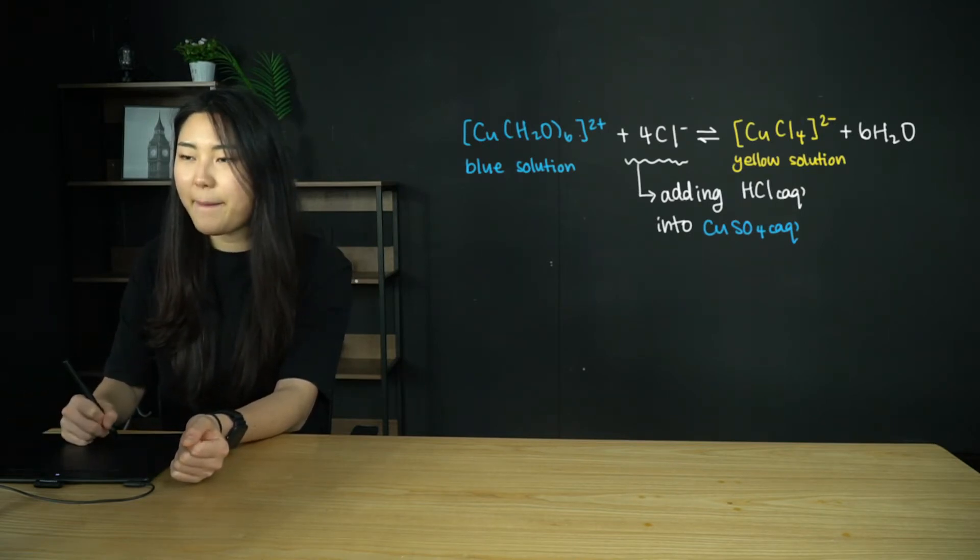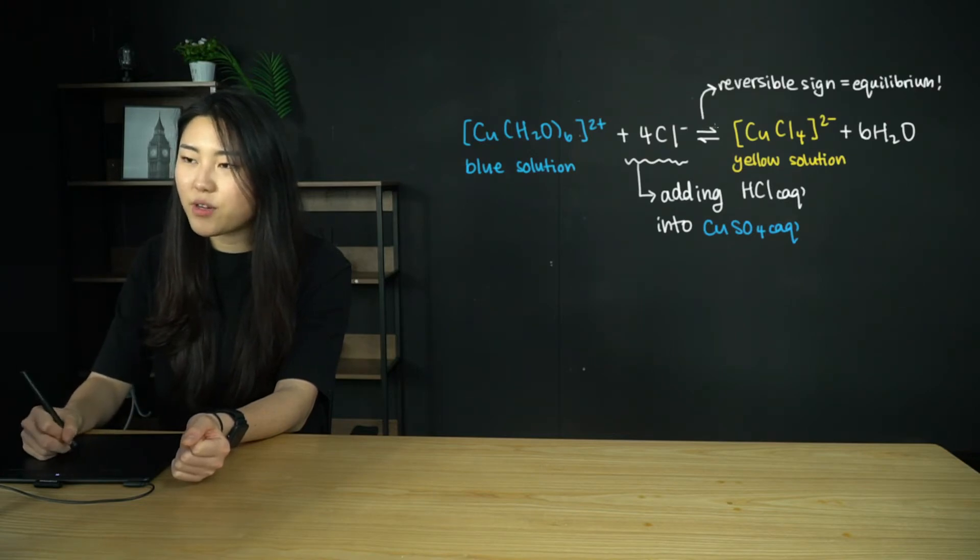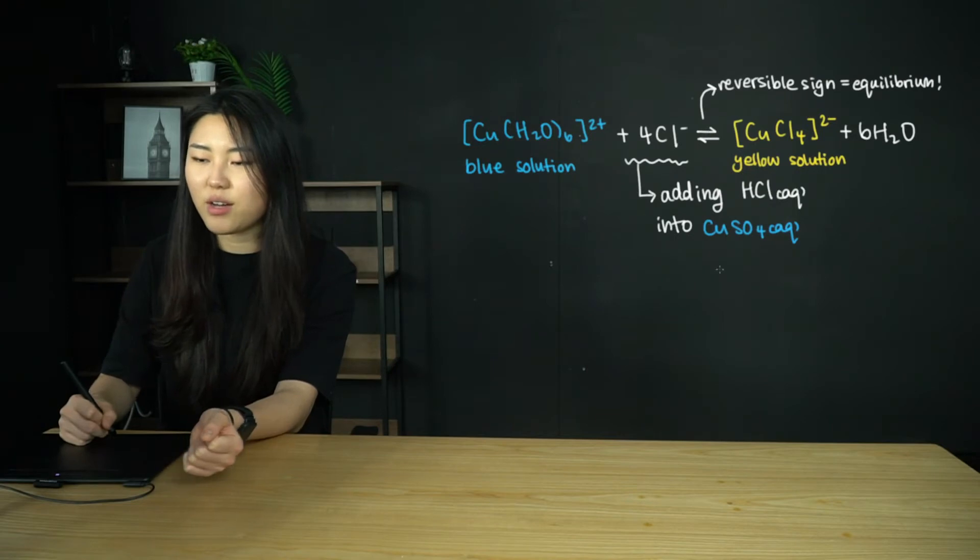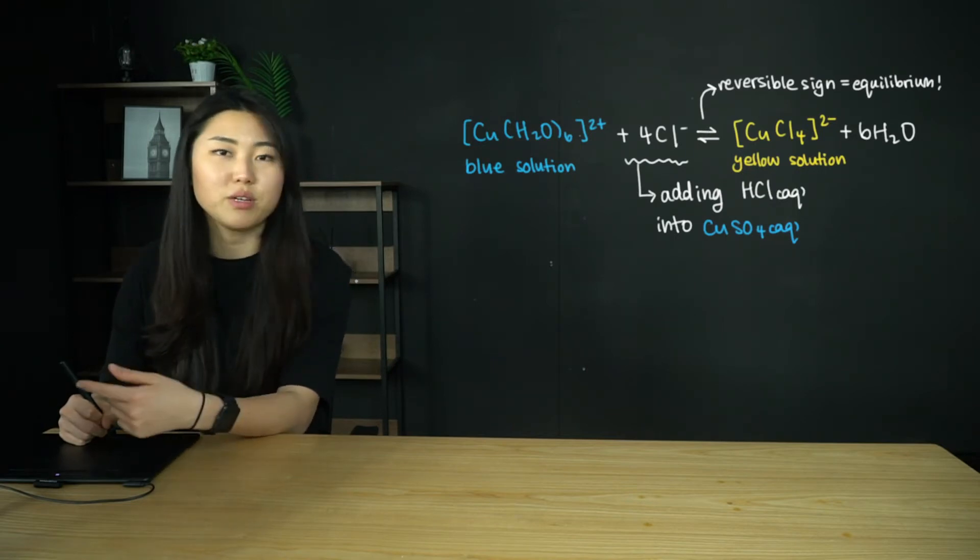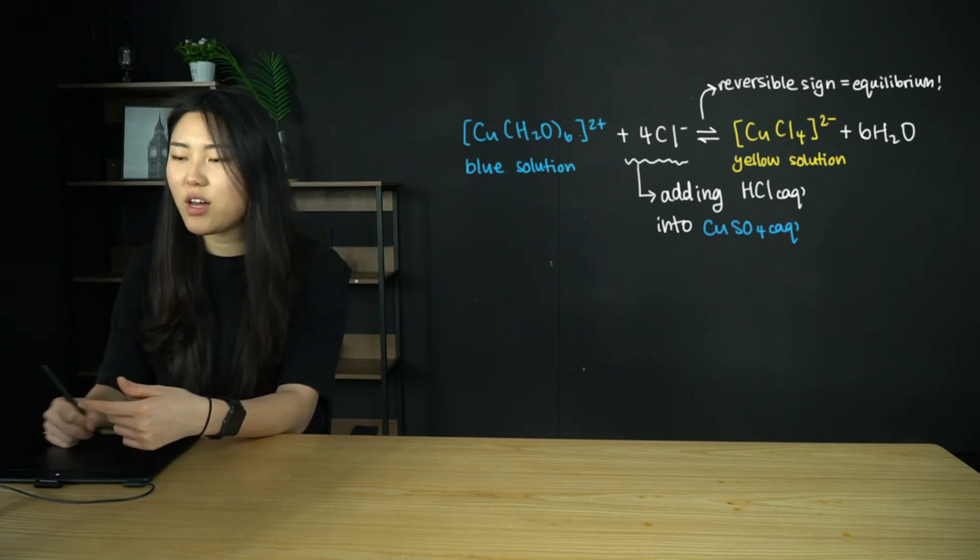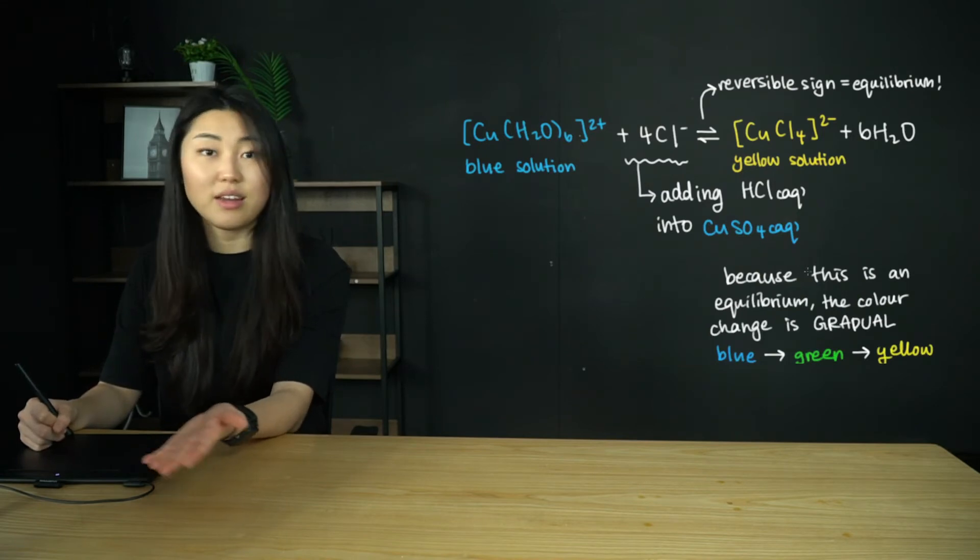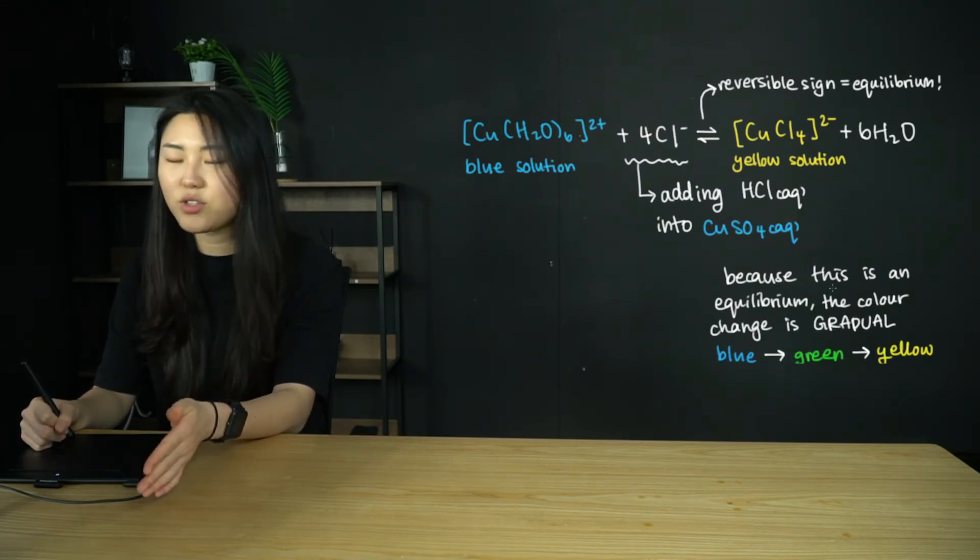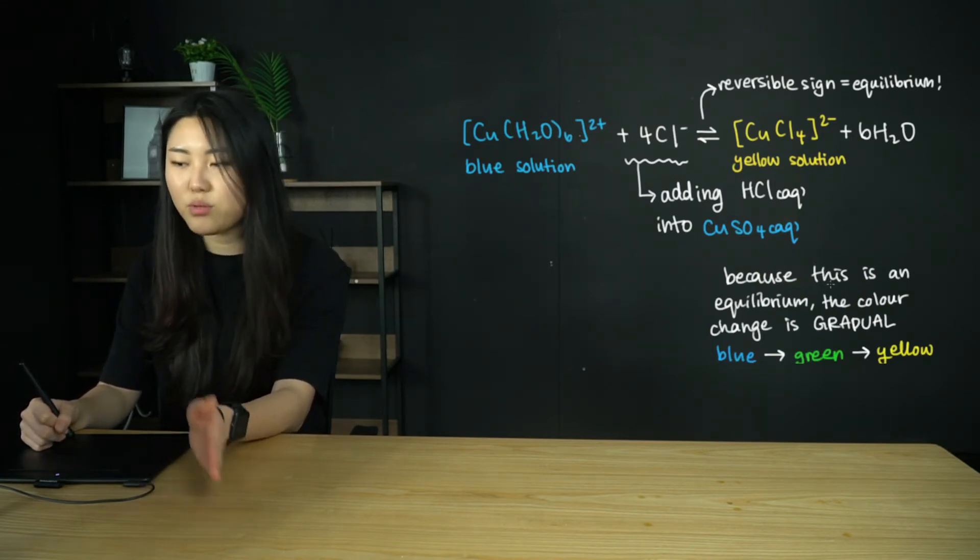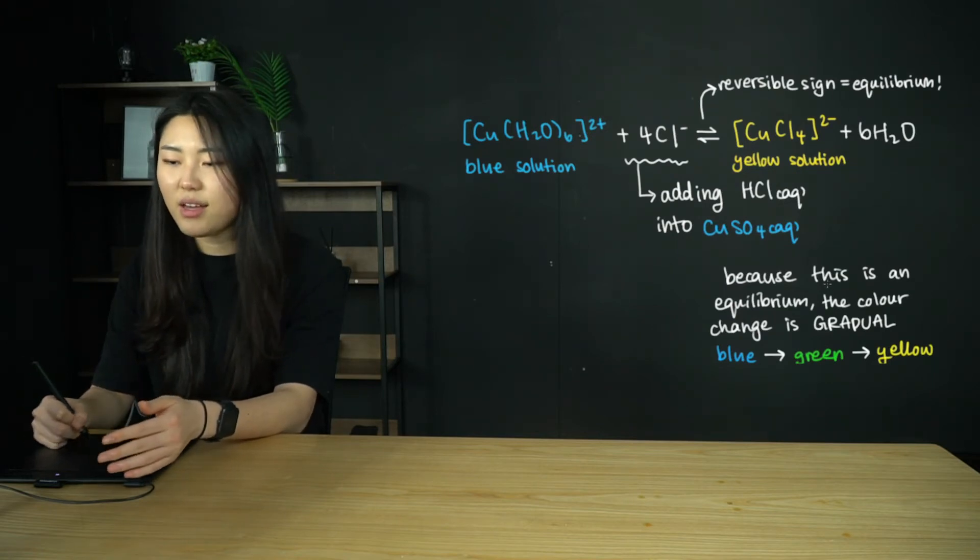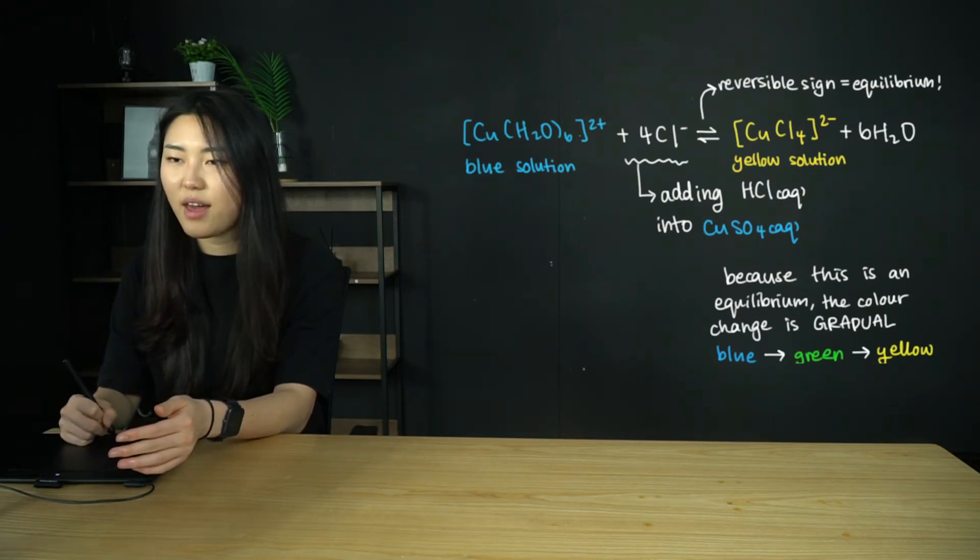Notice that there is a reversible sign, so this is an equilibrium. This is not just an equation that goes to completion right away. Because this is in equilibrium, the color change is going to be gradual from blue to green to yellow. I have a different example.